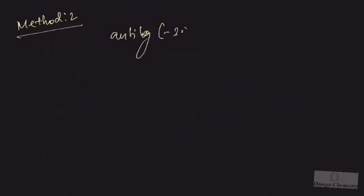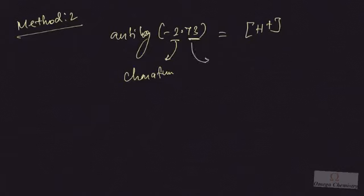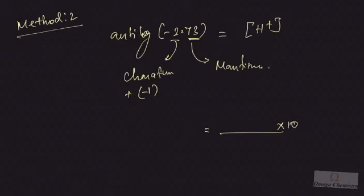Method 2 is very simple and interesting. Taking antilog of minus 2.73, the digit before the decimal point is called the characteristic, and the digits after the decimal point are called the mantissa. We add minus 1 to the characteristic part. So in the answer we will have 10 to the power of minus 2 plus minus 1, which is 10 to the power of minus 3.